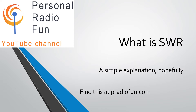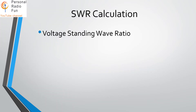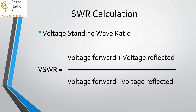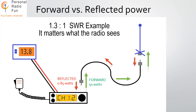SWR stands for Standing Wave Ratio, also called Voltage Standing Wave Ratio. It's calculated based on the voltage going forward in the system and the voltage reflected back. Don't worry about the formula — just know that there's division involved, which is what makes it a ratio.